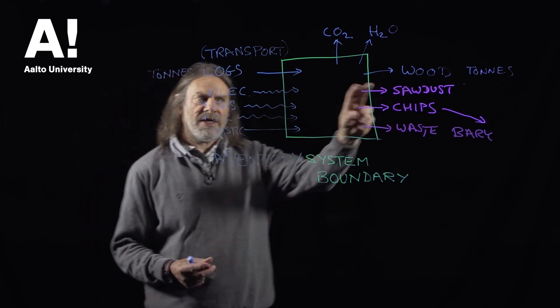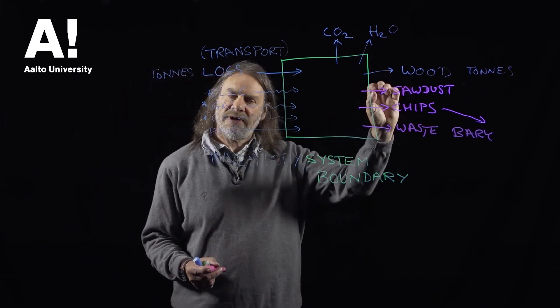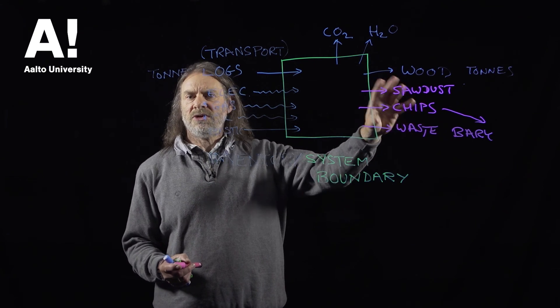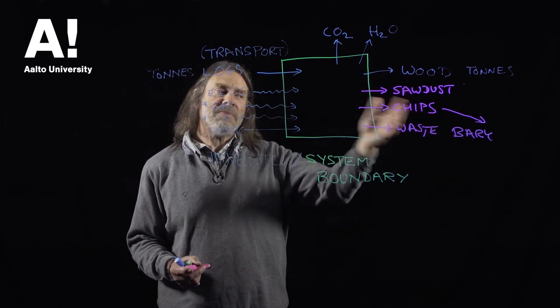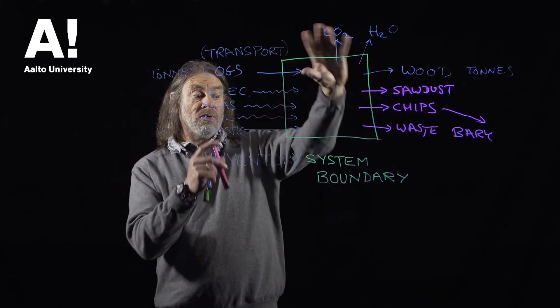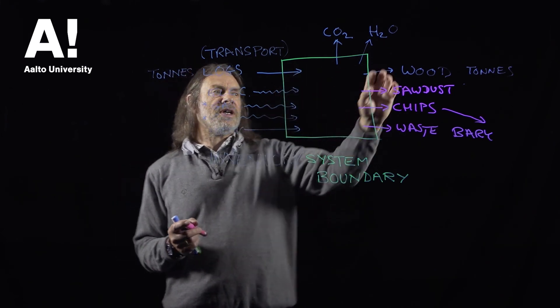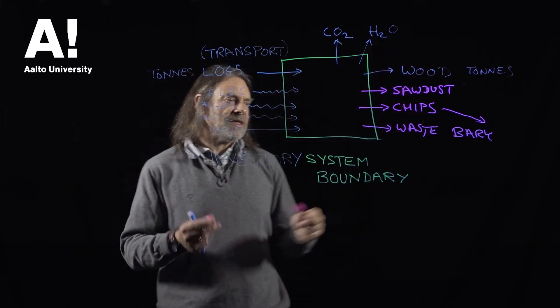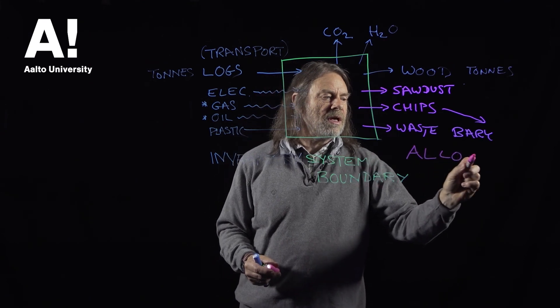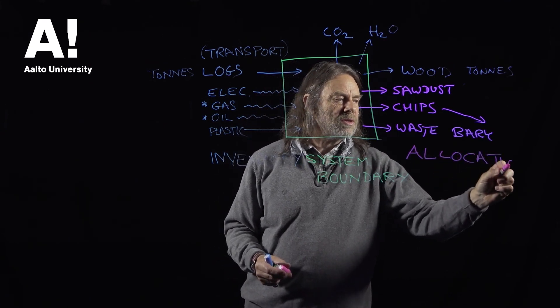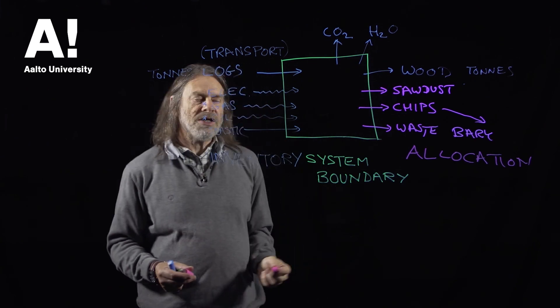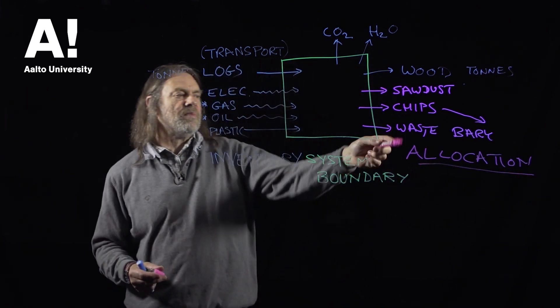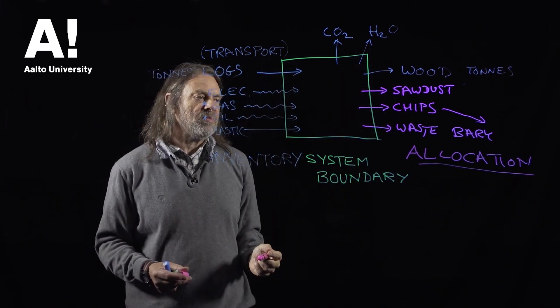So all of these things may have a value, in which case, if they have a value, they're not waste materials. You can't treat them as if they have zero impact. So all the impacts associated with this processing somehow have to be allocated amongst all the outputs from the sawmill. So we have this what's called an allocation issue. How are we going to allocate the impacts between these different outputs?